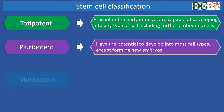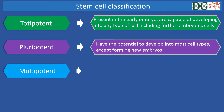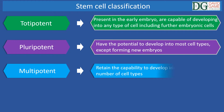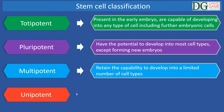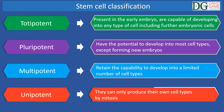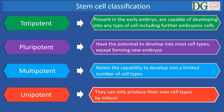Later in development, including adulthood, certain cells retain the capability to develop into a limited number of cell types and they are described as being multipotent. All of the cells in an adult animal are described as being unipotent as they can only produce their own cell types by mitosis.